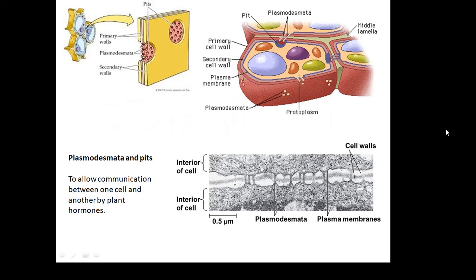Plasmodesmata and pits. Now the plant cells can actually communicate with each other and they communicate using plant hormones which are chemicals, and they do so through these little holes in the side called plasmodesmata and pits. It enables the cells to communicate with each other.